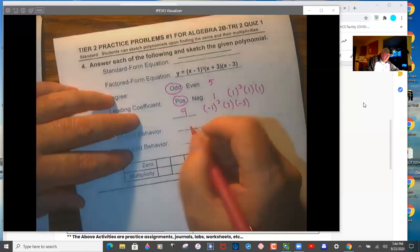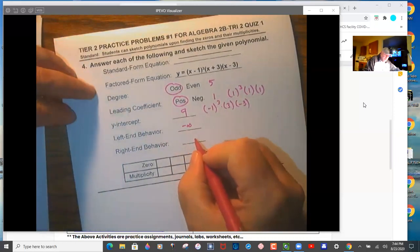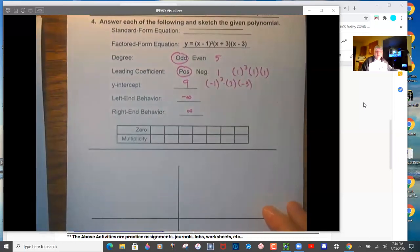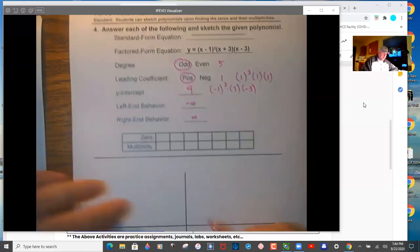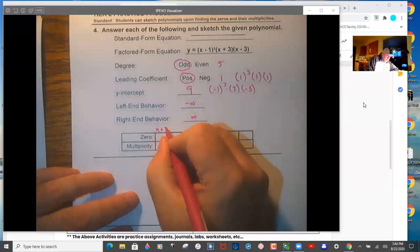And then left end behavior. So odd positive is negative infinity, positive infinity. This really is pretty simple once you get it. You're also welcome to enter this in your calculator and check things out.